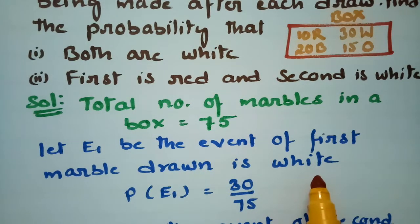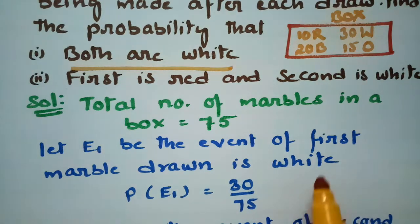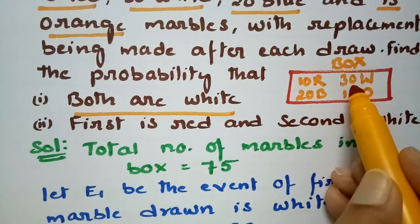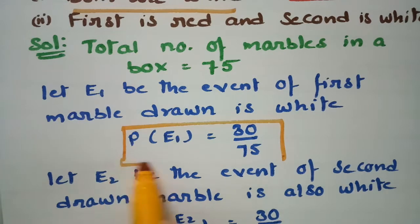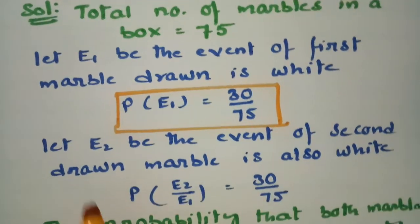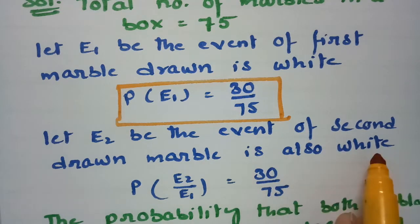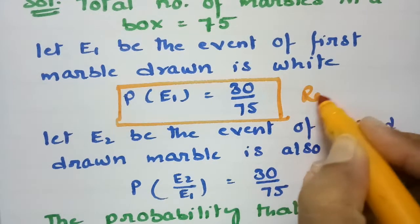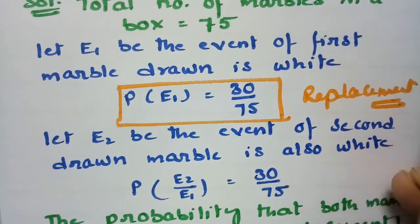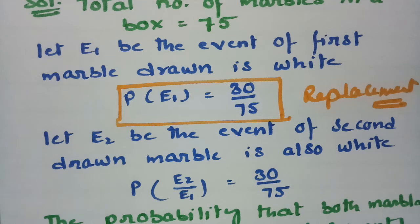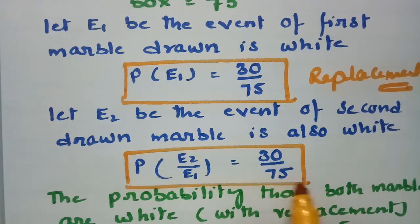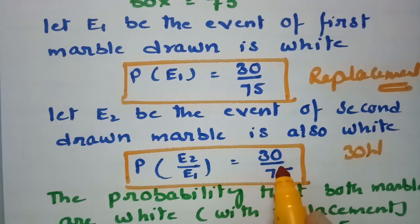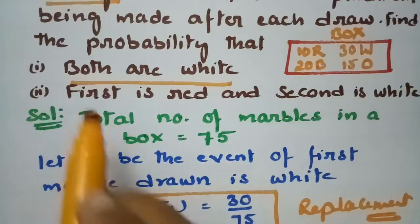Let E1 be the event that the first marble drawn is white. There are 30 white marbles out of 75 total, so P(E1) = 30/75. Let E2 be the event that the second marble is also white. Since we replace after the first draw, there are still 30 whites out of 75, so P(E2) = 30/75.